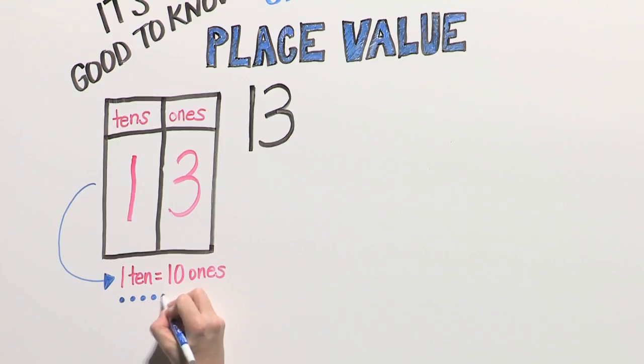But what does one ten mean? One ten is made up of ten ones. In place value, a ten is a bundle of ten ones. This can be tricky to understand at first, so starting with objects can help.